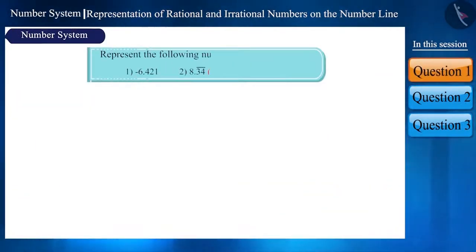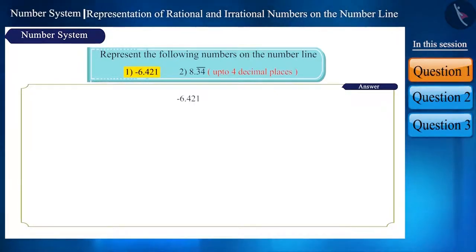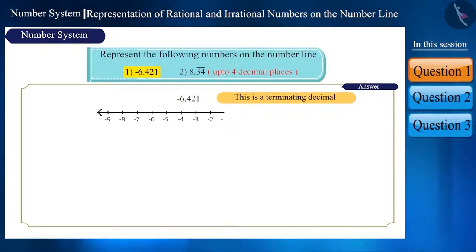Let's start with our first question. Represent the following numbers on the number line. The first number is minus 6.421. This is a terminating decimal. Friends, don't get confused seeing the negative sign. This number will lie between minus 6 and minus 7 on the number line.